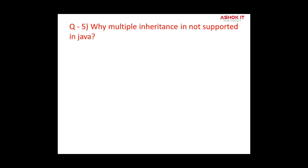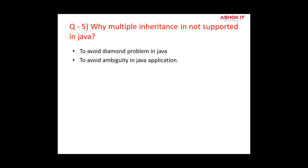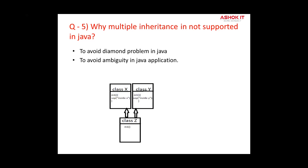Question five: Why is multiple inheritance not supported in Java? To avoid the diamond problem and ambiguity. For example, if class Z extends class X and class Y, and both X and Y have the same method M1 with the same signature but different implementations, the Java compiler cannot decide which M1 method to inherit. This creates ambiguity, so to prevent this diamond problem, multiple inheritance is not supported in Java.